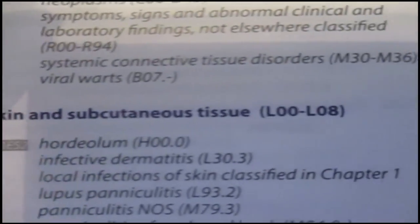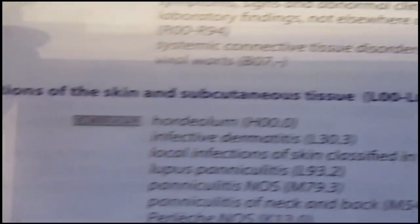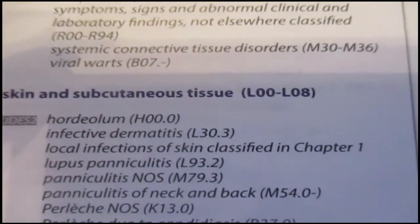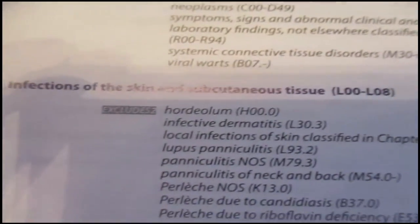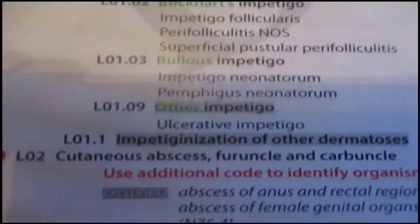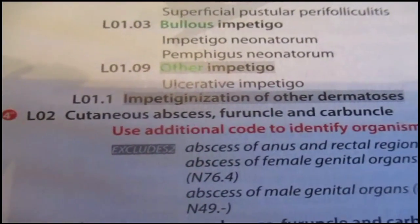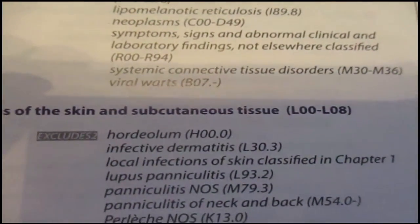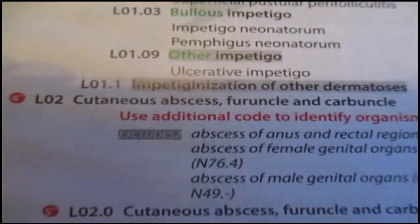Let's use L-00 as an example. You'll notice it says L-00 through L-08 — these are infections of the skin and subcutaneous tissue. That's a group of three-digit categories. L-00 is a category through L-08 is a category, and a group of three-digit categories is considered a section. If I go down to L-02 — cutaneous abscess, furuncle, and carbuncle — that is a three-digit category. So notice the difference: a section is a group of three-digit categories, and a category is a three-digit code.